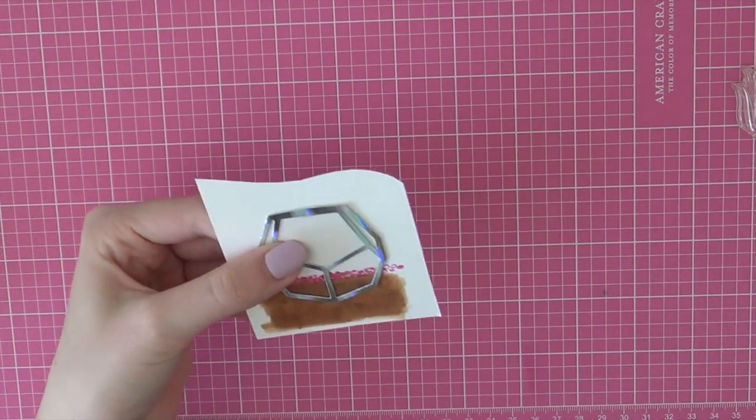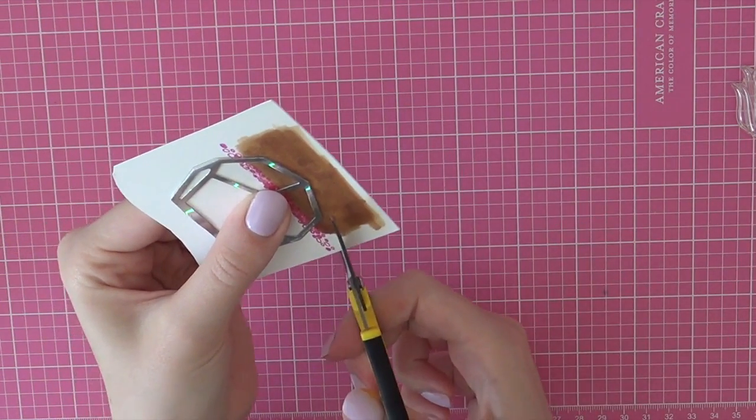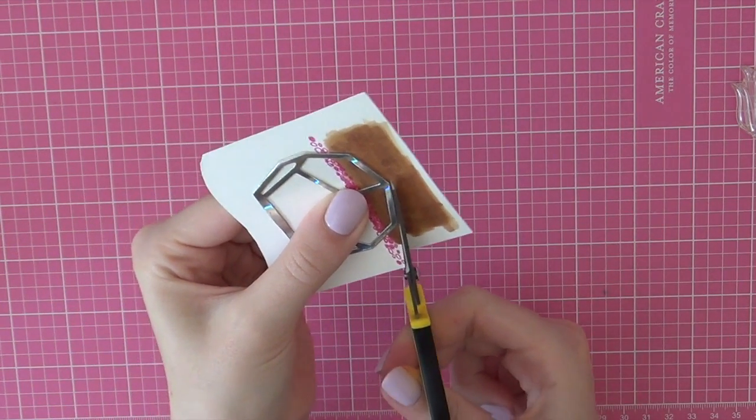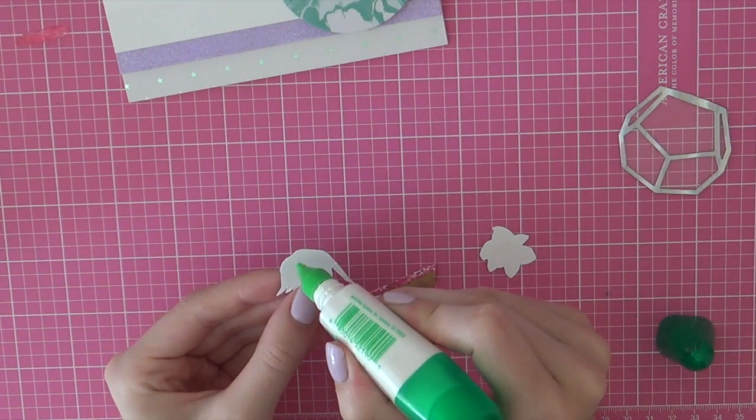So I am just going to color that really fast. And then I am going to position my terrarium with the colored piece. So I am just going to hold that tight and then I can cut around the edges.